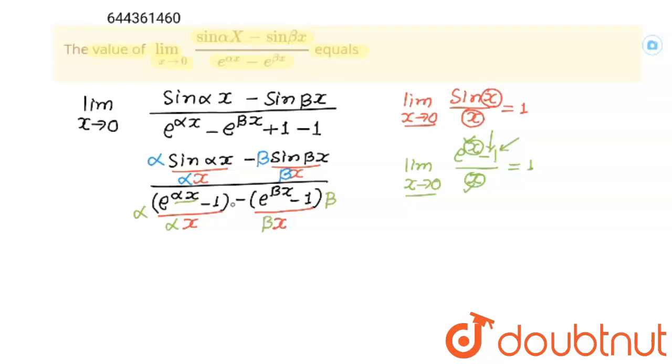Now we can write the answer. This and this are according to our formulas. Both limits will become 1. So alpha into 1 will become alpha minus beta into 1 will become beta. And this will become 1 for this formula and this will also become 1 according to this formula. So 1 into alpha will become alpha minus 1 into beta will become beta and these both will cancel out, and this will become 1 answer.